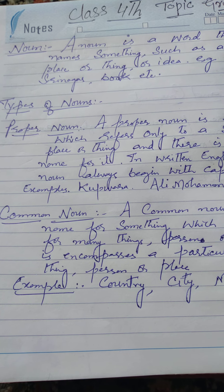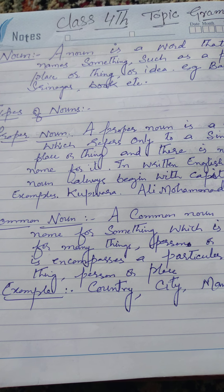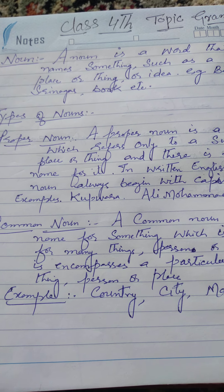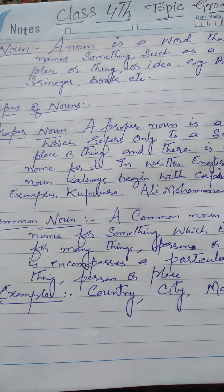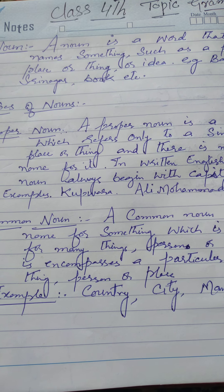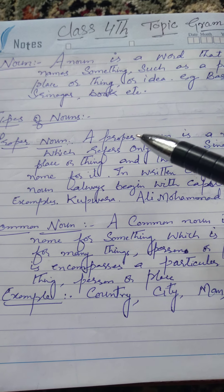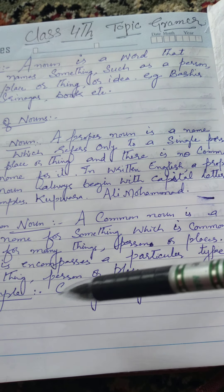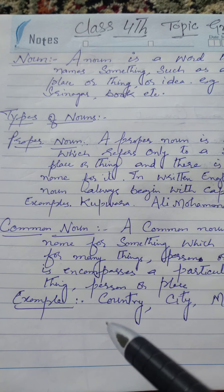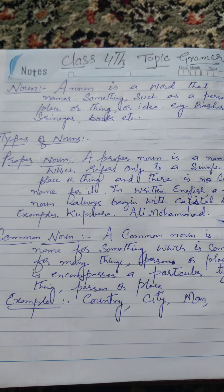For example, 'district' used generally is a common noun, but a specific district name is a proper noun. A common noun refers to a category, while a proper noun refers to a specific instance. For example, if you look at a specific district like 'Kofara,' that becomes a proper noun, whereas 'district' alone remains a common noun.